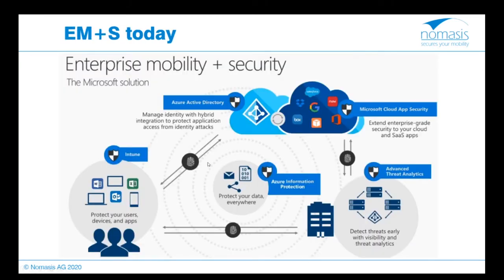Enterprise Mobility and Security has five key components: Intune, Azure Active Directory, Microsoft Cloud App Security, and Azure Information Protection. The part I will show you today is Advanced Threat Analytics, which has now been renamed — since more than one month ago — to Microsoft 365 Defender.